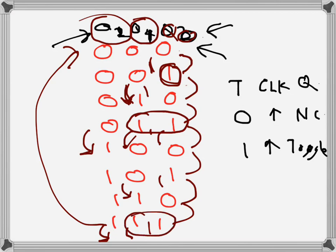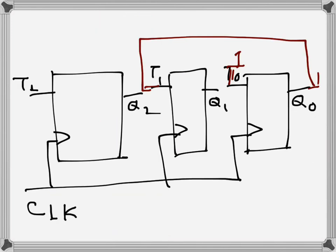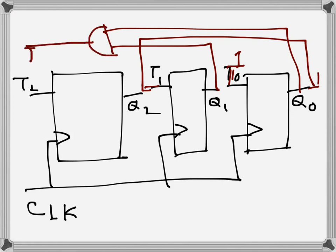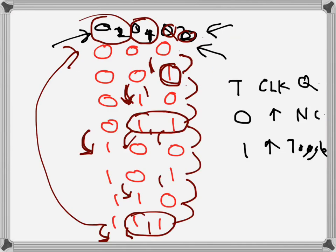We want T2 to be 1 only when both Q0 and Q1 are 1. So if we connect these two to an AND gate and then connect it to T2, whenever both Q0 and Q1 are not 1, T2 will be 0 because the output will be 0. Only when both Q0 and Q1 are 1 will T2 get a 1 as input and toggle. This is what's happening here - it's toggling just twice.